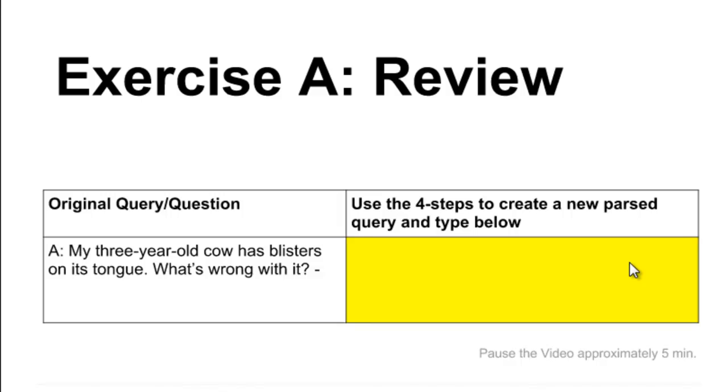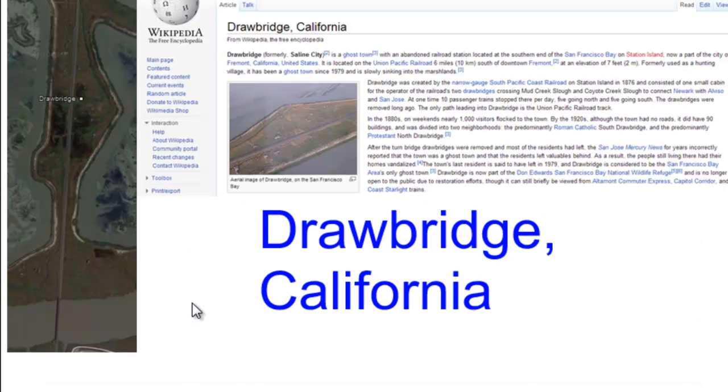How successful were you? Were you able to parse all three of those questions in exercise A of your worksheet? I hope so. My favorite one is that third one. That third one, if you parse it just right, should return with information about Drawbridge, California. And if you actually do a search for Drawbridge, California, you can take a look at the Wikipedia entry. Or even better yet, take a look at Google Maps.